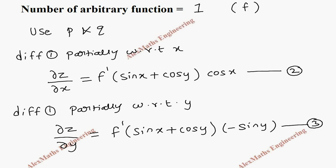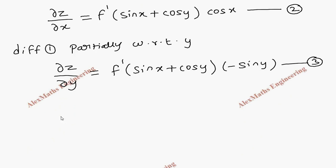We are going to divide the second expression by the third expression. So on the left-hand side, ∂z/∂x is p, and in the denominator, ∂z/∂y will be q. On the other side,